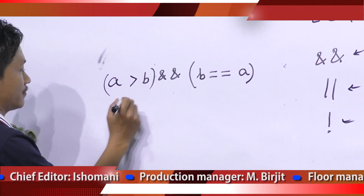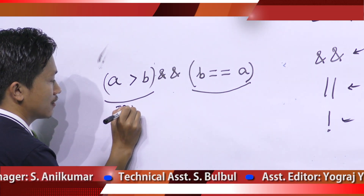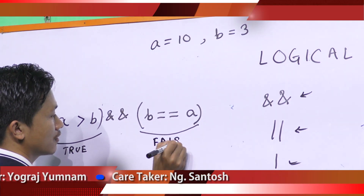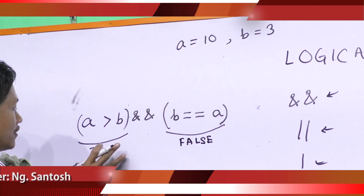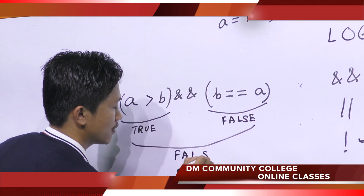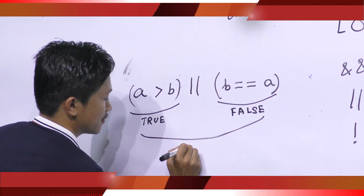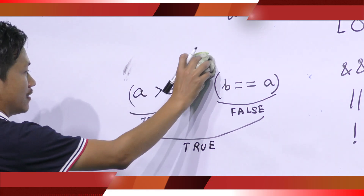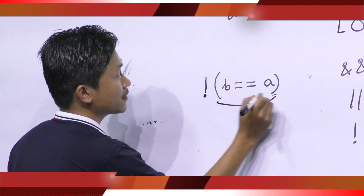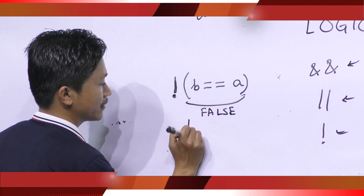For example, the operands are: A is greater than B, which is true, and B equals A, which is not true. Since one operand is true and one is false, logical AND returns false. However, if this was logical OR, then it would return true. In another case, applying logical NOT to this whole false expression would return true.